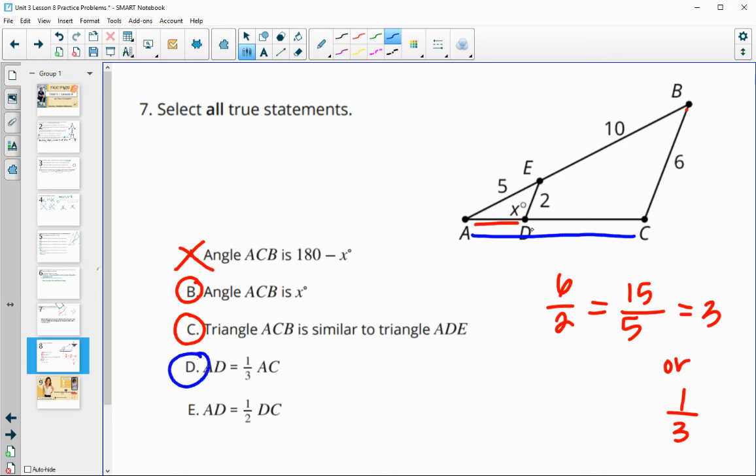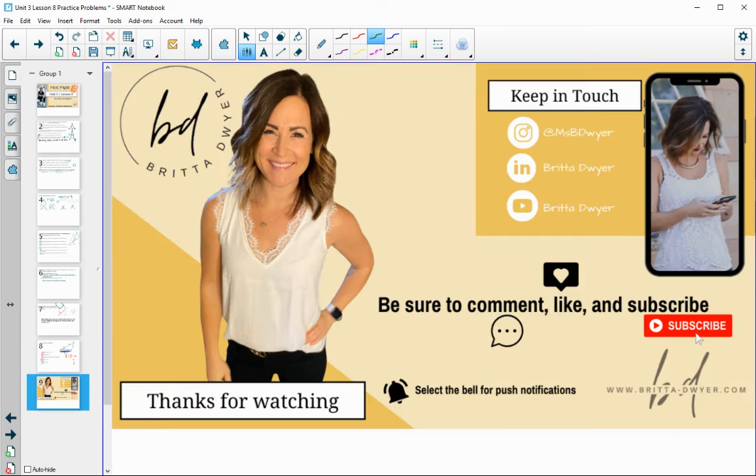And then AD is half of DC. So here's DC. And so if this is one part and the total is three parts, then this would be two parts. So one to two, it would be one half of DC. So one third of the full segment. So one third of AC, but one half of DC. So one third of BC. See. Okay. See. Thank you.